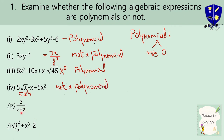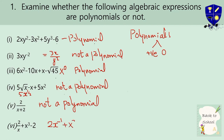Now look at the next expression: 2 divided by x plus 2. There is a variable in the denominator. When you shift it, the power of x becomes minus 1. That means it cannot be a polynomial — this is not a polynomial. Similarly, the last expression 2 by x: when shifted, it becomes 2x to the power minus 1. You can see that this is also not a polynomial.